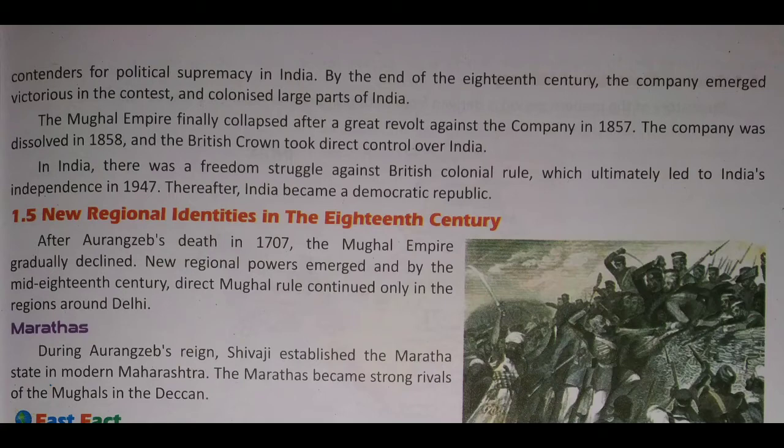The Mughal empire finally collapsed after the great revolt against the company in 1857. The company was dissolved in 1858, and the British Crown took direct control over India.